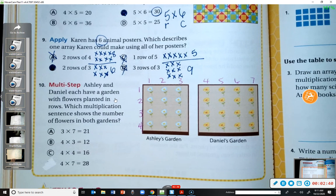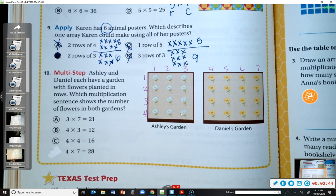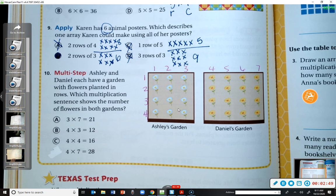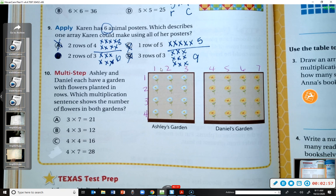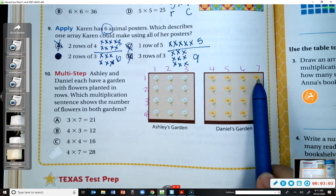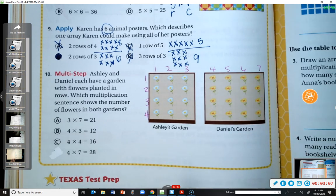Okay. Number 10. This is a multi-step problem. It says Ashley and Daniel each have a garden with flowers planted in rows. Which multiplication sentence shows the number of flowers in both gardens? Okay. In my book, you can already see I've labeled both gardens. I went ahead and counted all the way across both gardens. Okay. Because they are right next to each other, I can do that.